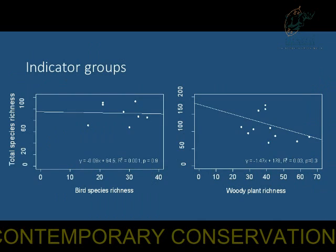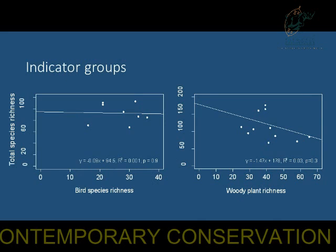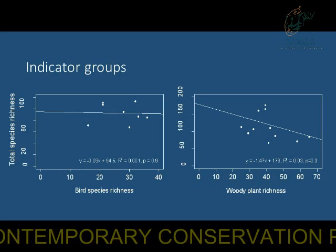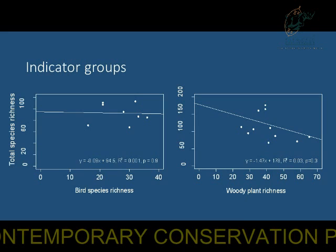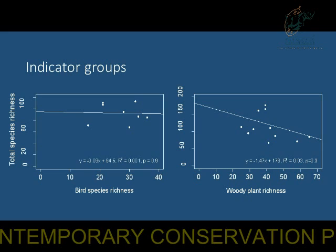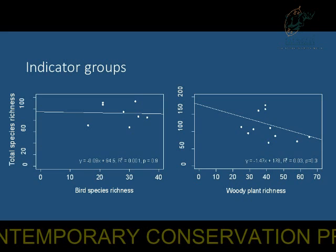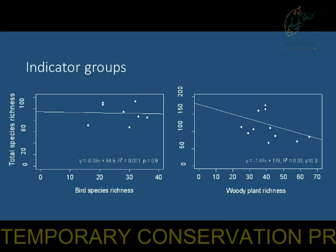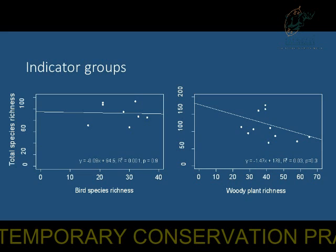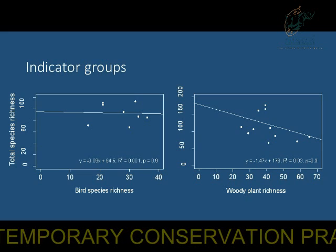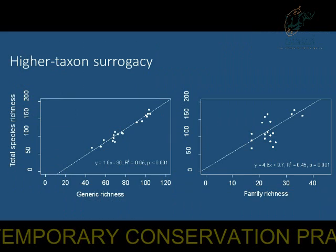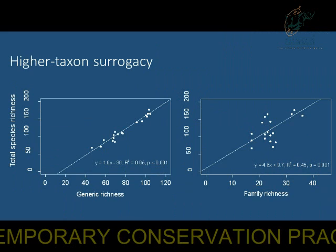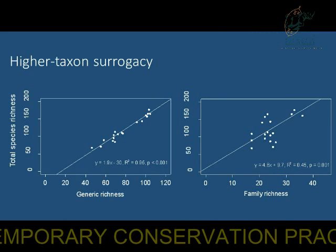We tried to establish the relationship between bird species richness as a predictor of total spider species. While we were doing this hectare sampling we also had an ornithologist recording birds and a botanist recording all woody plant species within that one-hectare area. What you can see is that there is almost no relationship between bird species richness and spider species richness, and there's also a negative relationship between woody plants and spider species richness. However, when we look at higher taxa, genera are quite a good predictor, with an R-squared of 0.95. It starts breaking down when you use families.